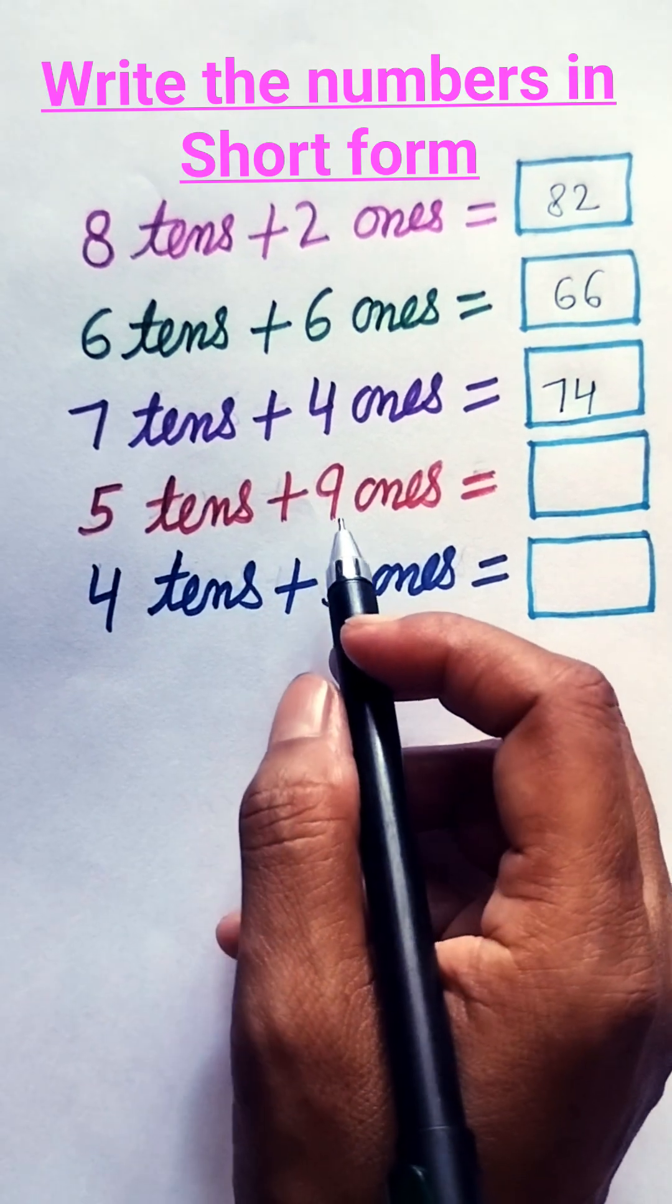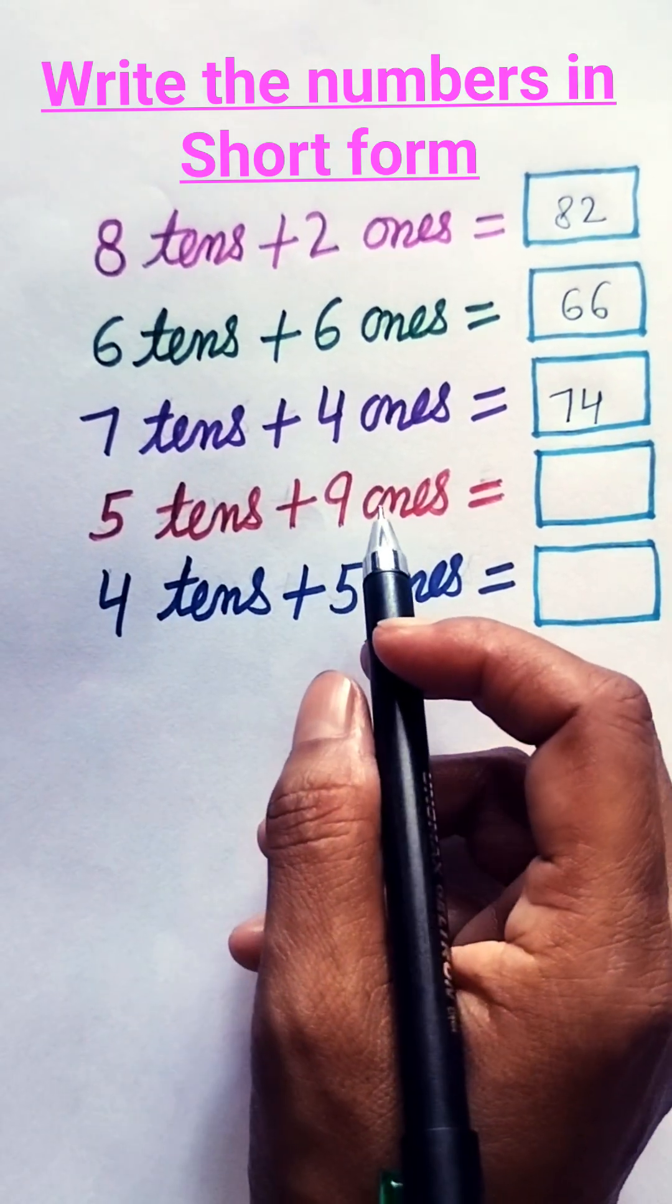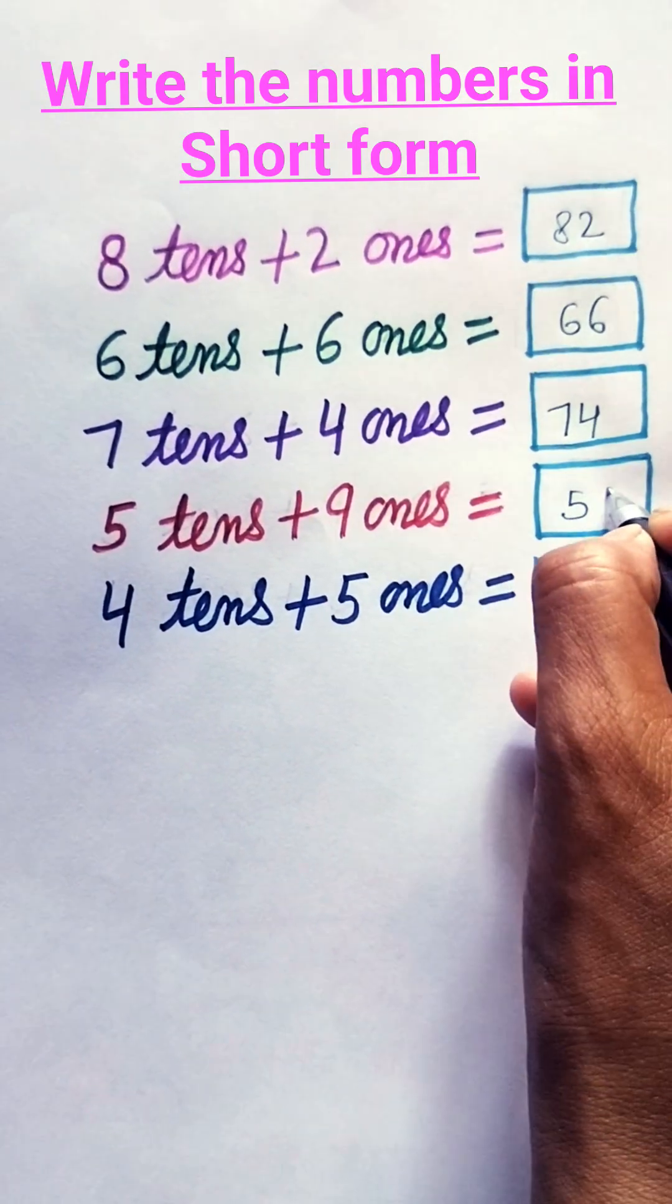5 tens plus 9 ones. 5 tens means 50, plus 9 ones means 9. 50 plus 9, 59.